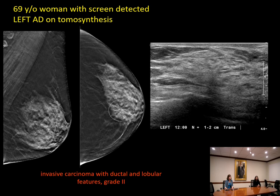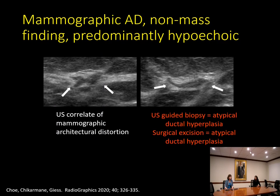Here's another example of tomo-only left architectural distortion detected on screening mammography with a very subtle hypoechoic non-mass area on ultrasound. Ultrasound-guided biopsy demonstrated invasive carcinoma with ductal and lobular features, grade two. Another example shows mammographic architectural distortion with a predominantly hypoechoic non-mass correlate shown in two orthogonal images. On one view it's a nondescript oblong hypoechoic area, but seen orthogonally it's a true three-dimensional correlate. This represented atypical ductal hyperplasia on both core biopsy and subsequent surgical excision.